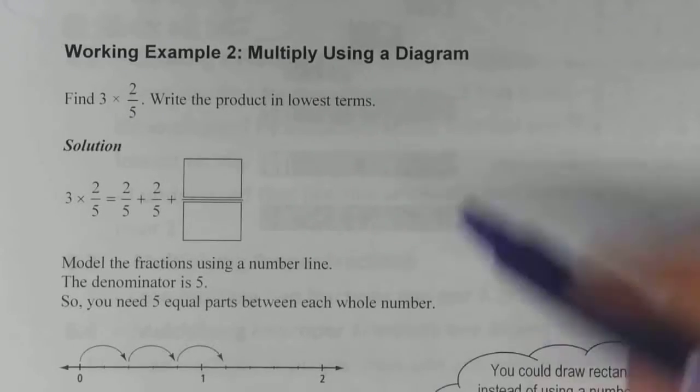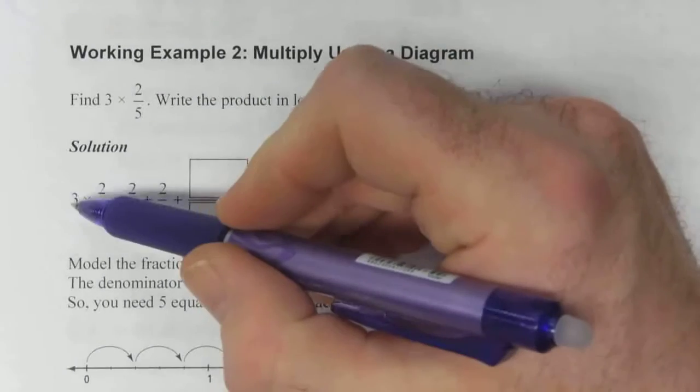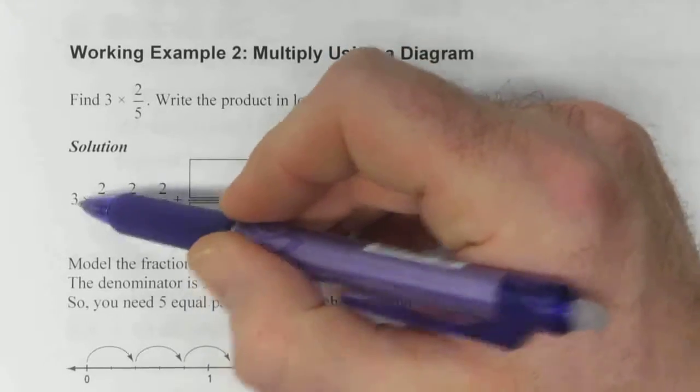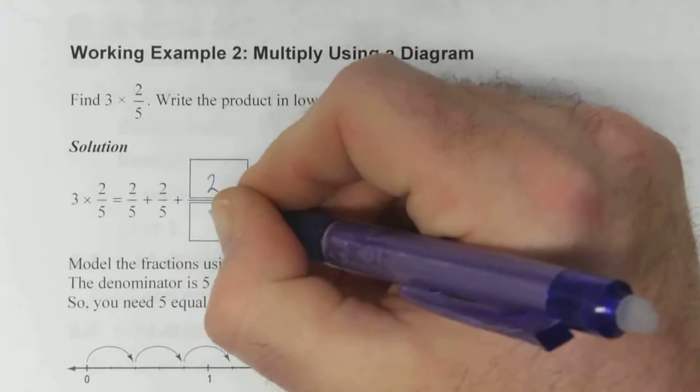So, three times two-fifths, again, multiplication is just repeated addition. So if we're multiplying two-fifths by three, that means we have three of these that we're adding together. One, two, and three.